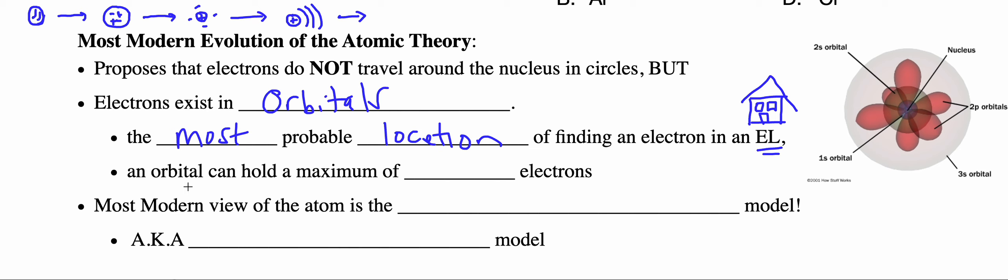Now an orbital, based on the quantum mechanics model, any orbital no matter what room in the house it's in, can hold a max of two electrons. This most modern theory or evolution of the atomic theory is usually referred to as the wave mechanical model.